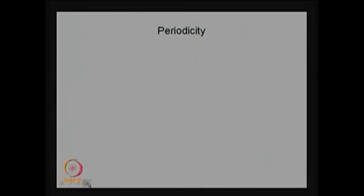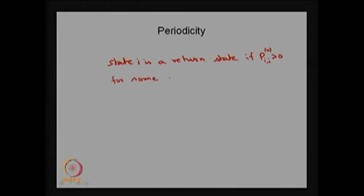The next concept is periodicity. State i is called a return state if P_{ii}^{(n)} > 0 for some n greater than or equal to 1. That means any state is called a return state if the probability of starting from state i and returning to state i in exactly n steps is greater than 0. I am going to define periodicity only for return states.